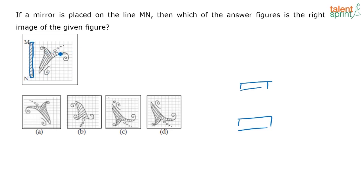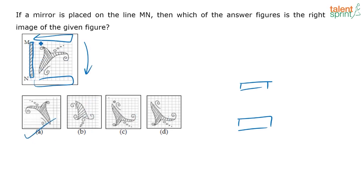For this image, the left hand side and the right hand side of the image should interchange in the mirror image. If you look at the options, the image is fully turned. Only if the mirror is in this direction or this direction can these cases come. The mirror here is placed on the left hand side, so the left and right of this image will only interchange. Top and the bottom of the image will remain the same — left and right will interchange. So the image will look like this — that is option A.